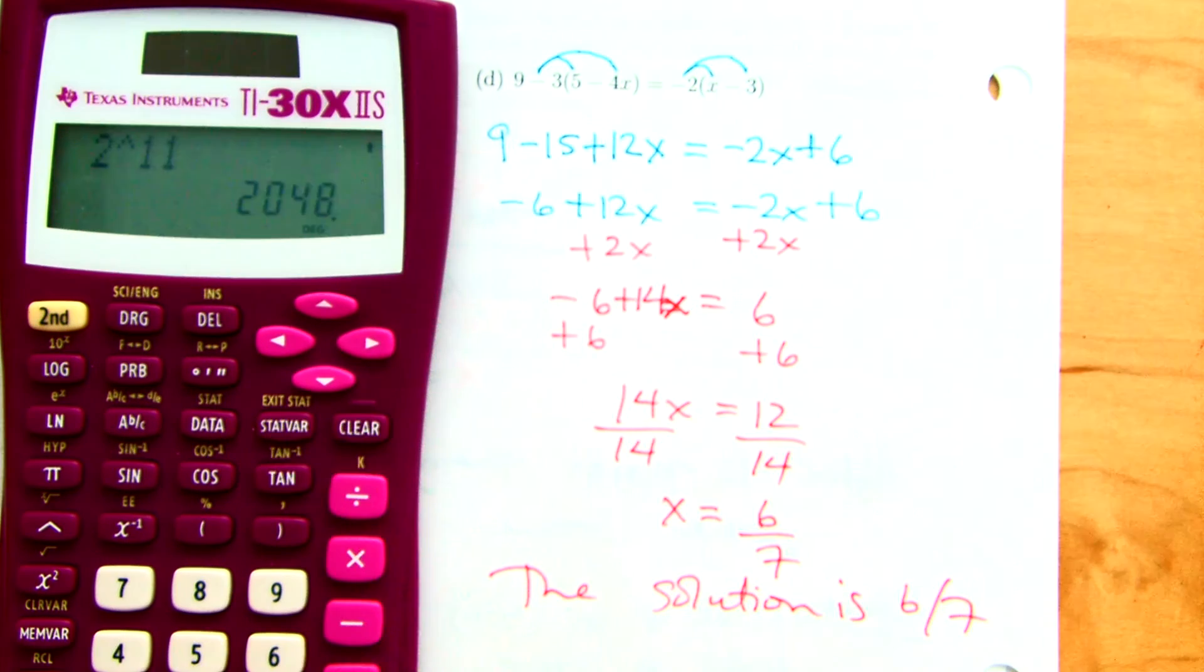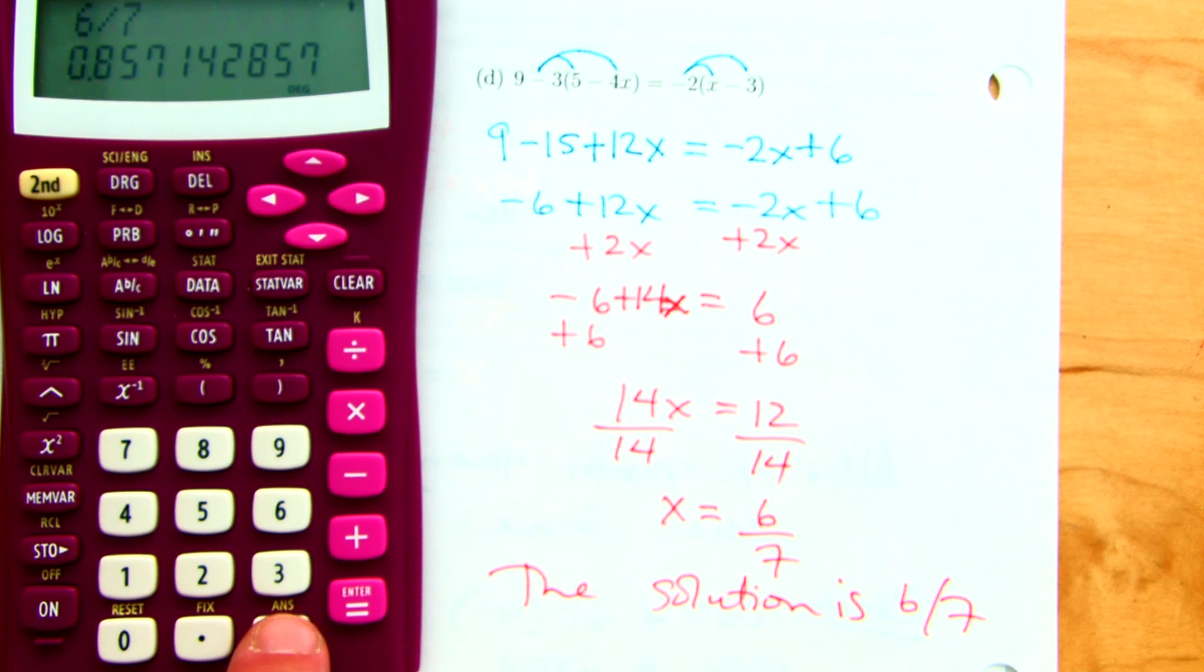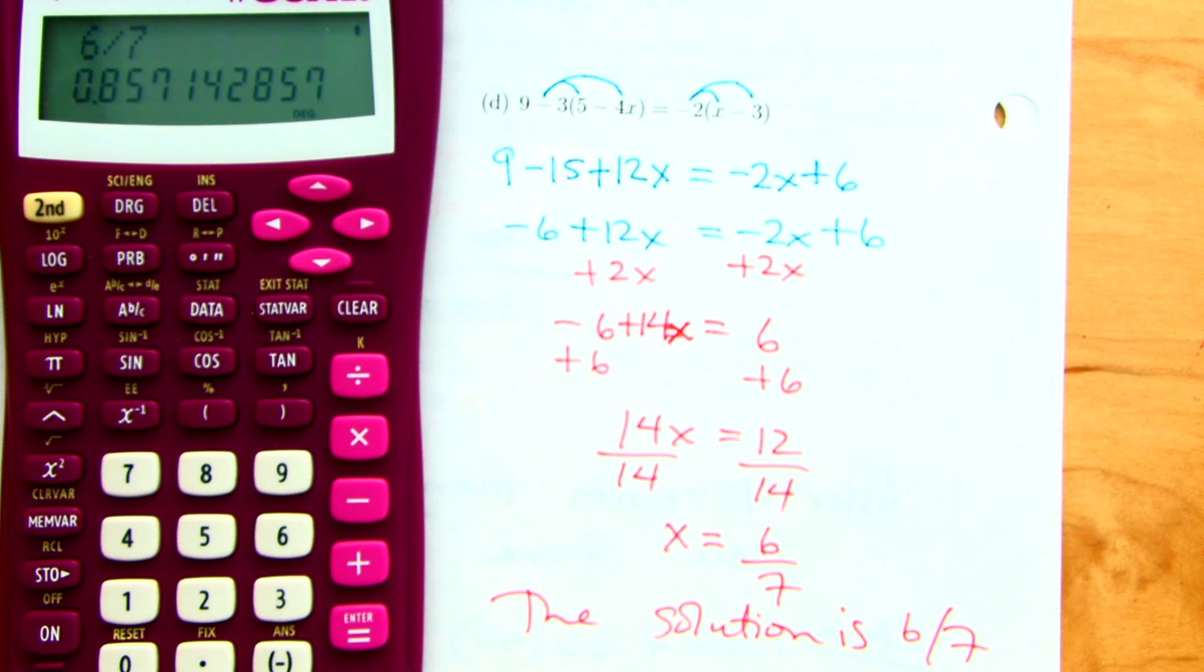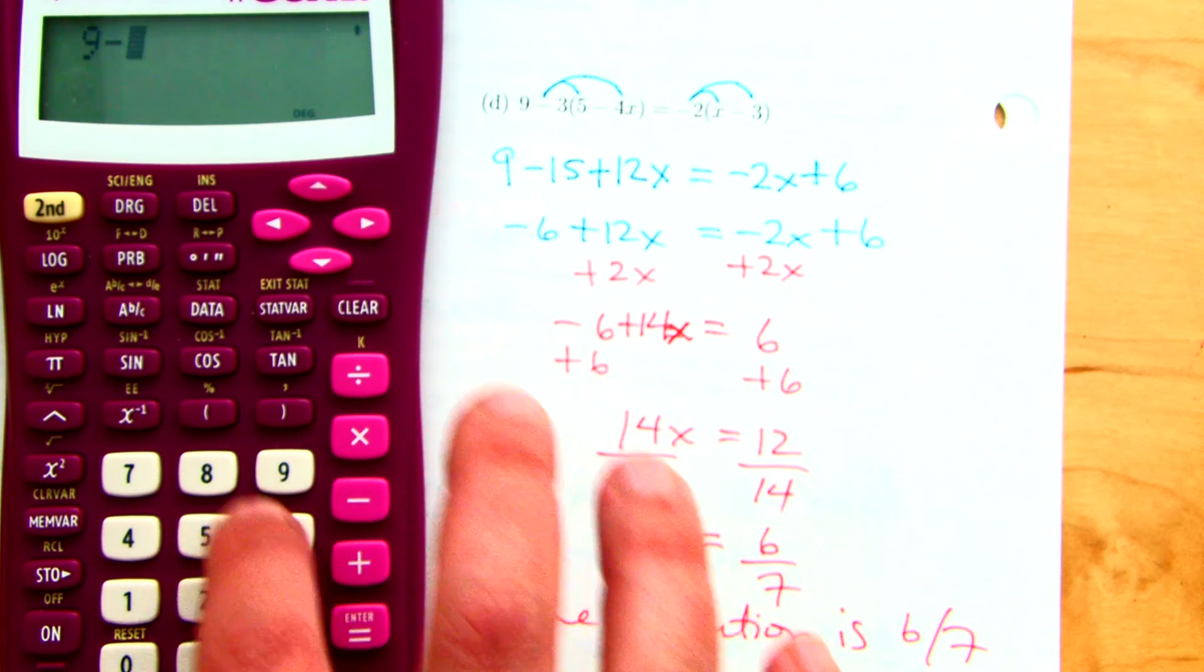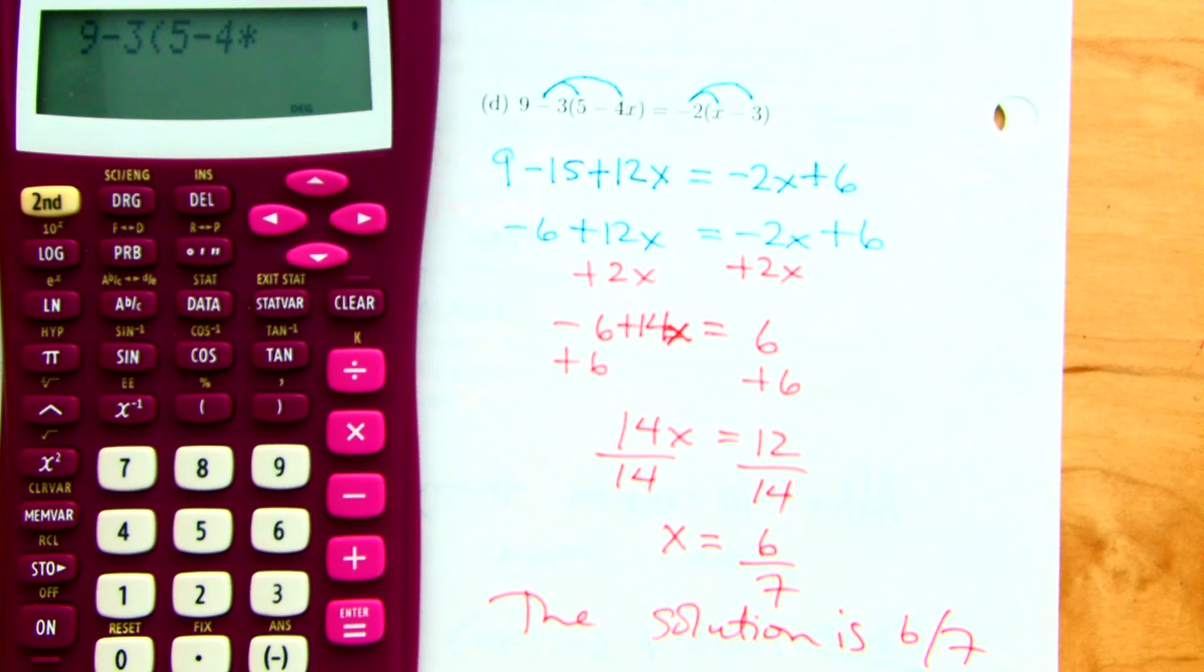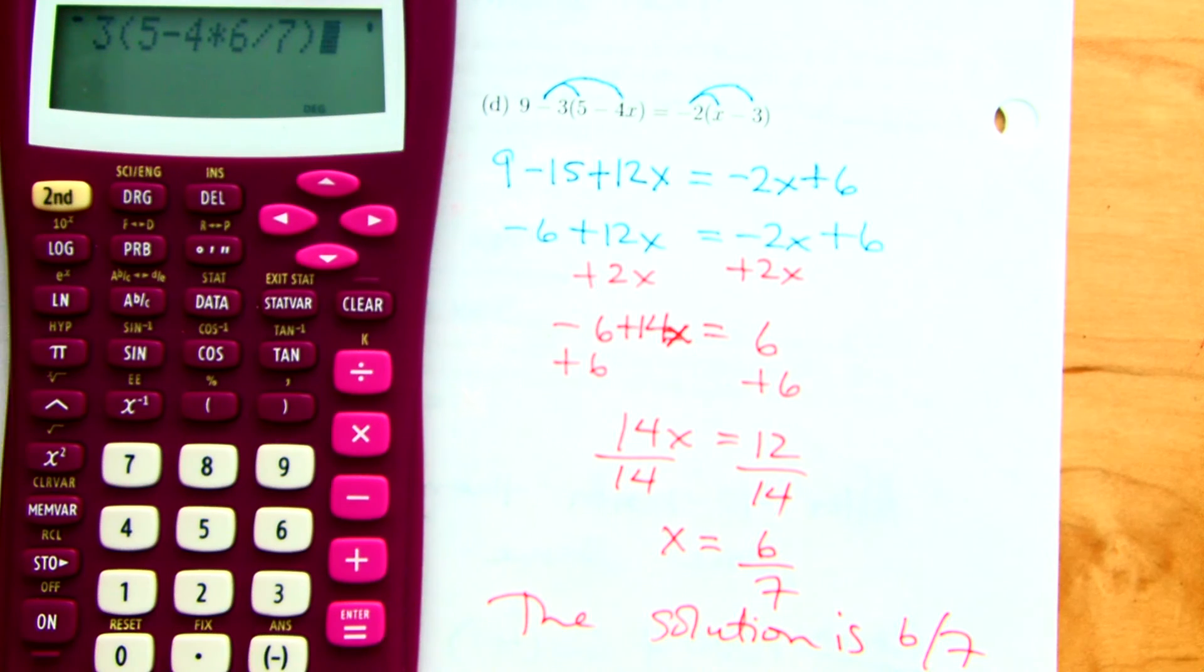So if I were to take 6 divided by 7, I'm getting a repeating decimal. What's really cool about some of your calculators have this word ANS. And everything on your calculator, all the yellow, is controlled by the second key. So if I plug in 9 minus 3 times (5 minus 4 times), I could put 6 divided by 7 here. I could actually put 6 slash 7. Or I could go second ANS and it will take that decimal and plug it in. A fraction is just a division problem, right? 6 divided by 7.